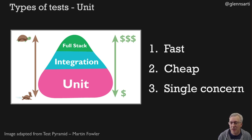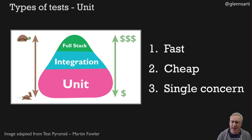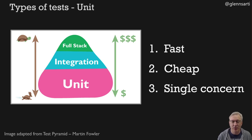Notice how the size of each group in the pyramid is smaller toward the top. So ideally you should have lots of unit tests, some integration tests, and very few full stack tests. Think of it as a quality budget — you've only got a finite amount to invest, and unit tests are cheap so you can have a lot of them.